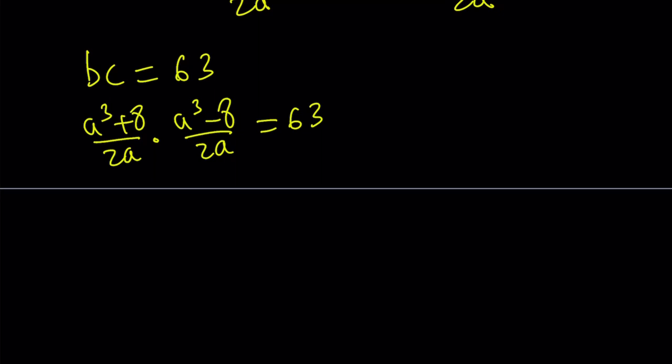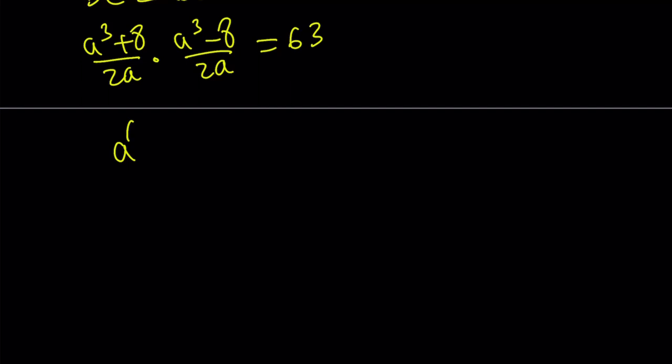Notice that a cubed plus 8 and a cubed minus 8 are conjugates. Therefore, the product is going to be a difference of two squares. Which is a to the 6th power minus 64. And the bottom is going to be 4a squared. And the whole thing equals 63.